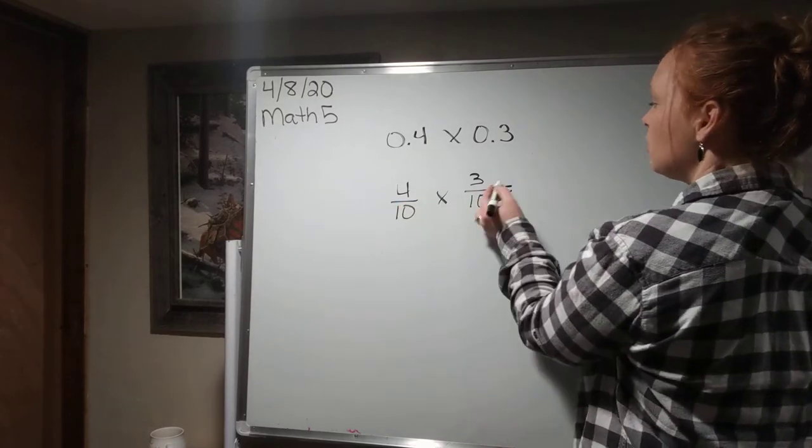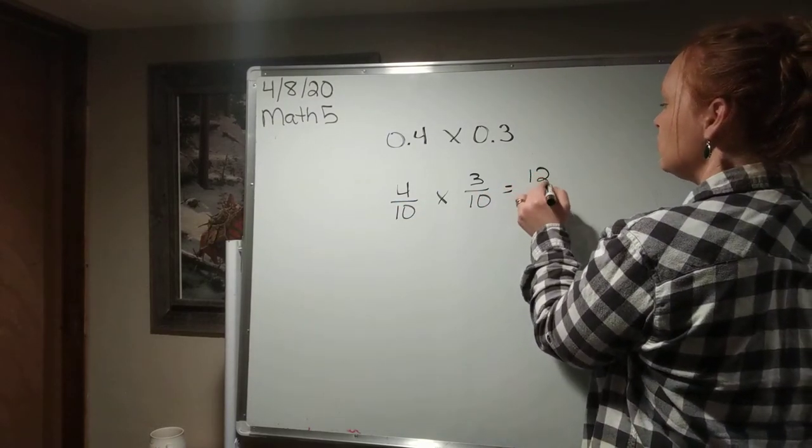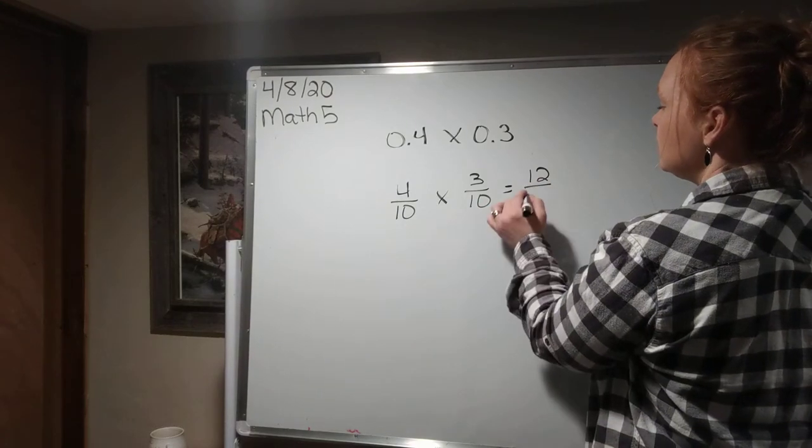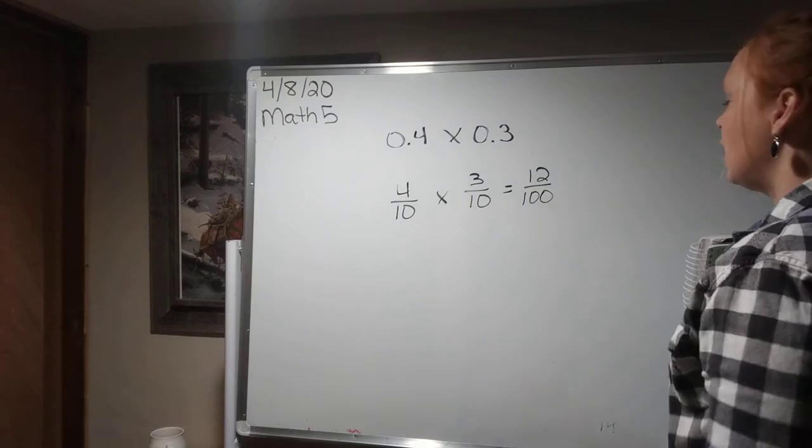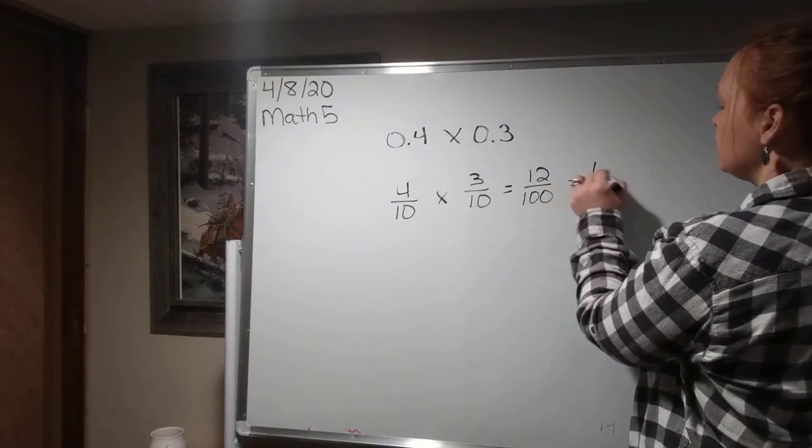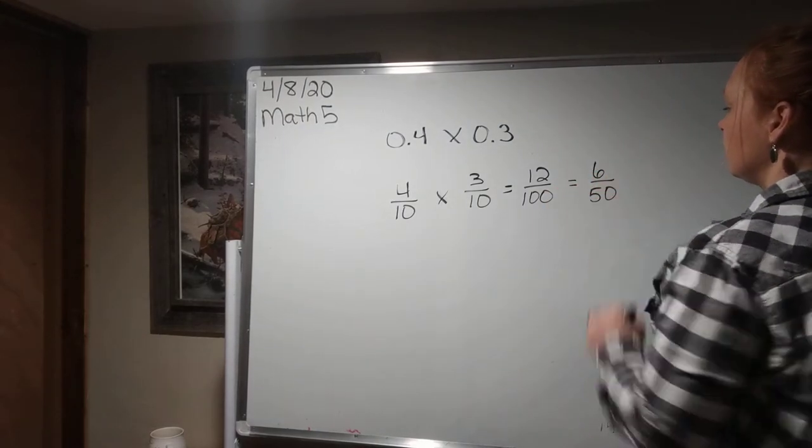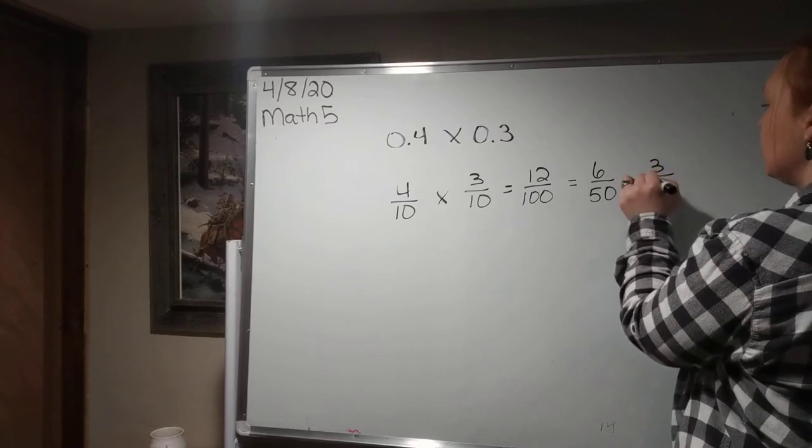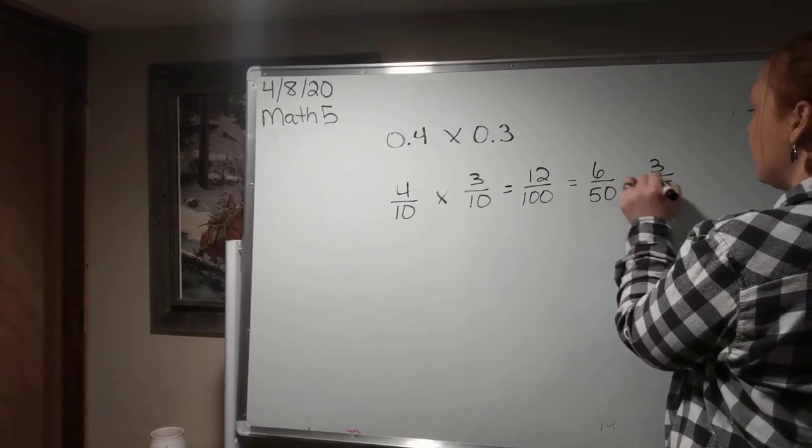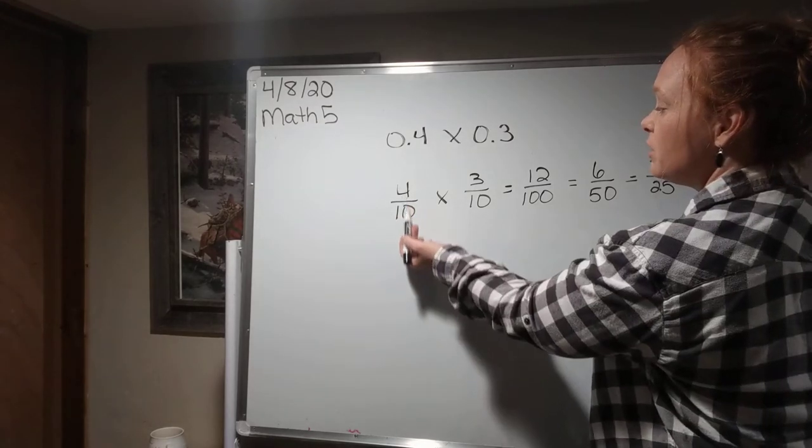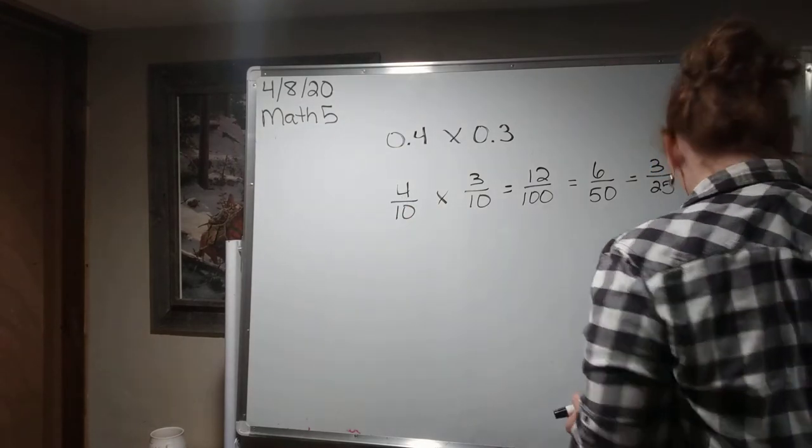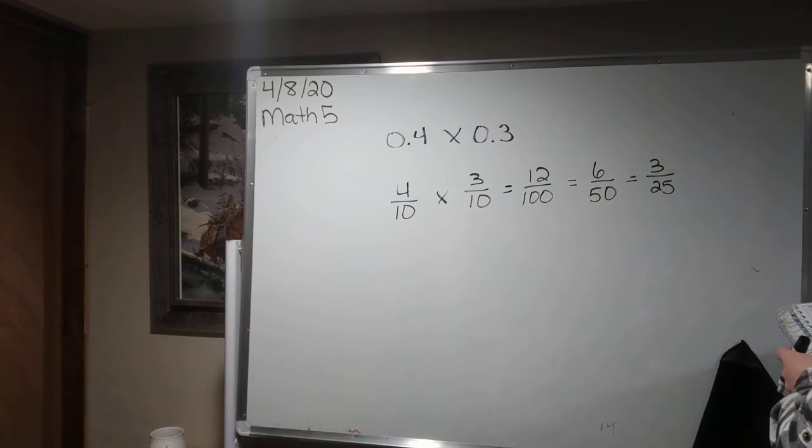So I can go ahead and multiply across, and I get 4 times 3 is 12, and 10 times 10 is 100. Now I want to reduce that down, 6 over 50, 3 over 25. How could I have kept from doing this? I could have reduced and cross-reduced. But I get 3 25ths.